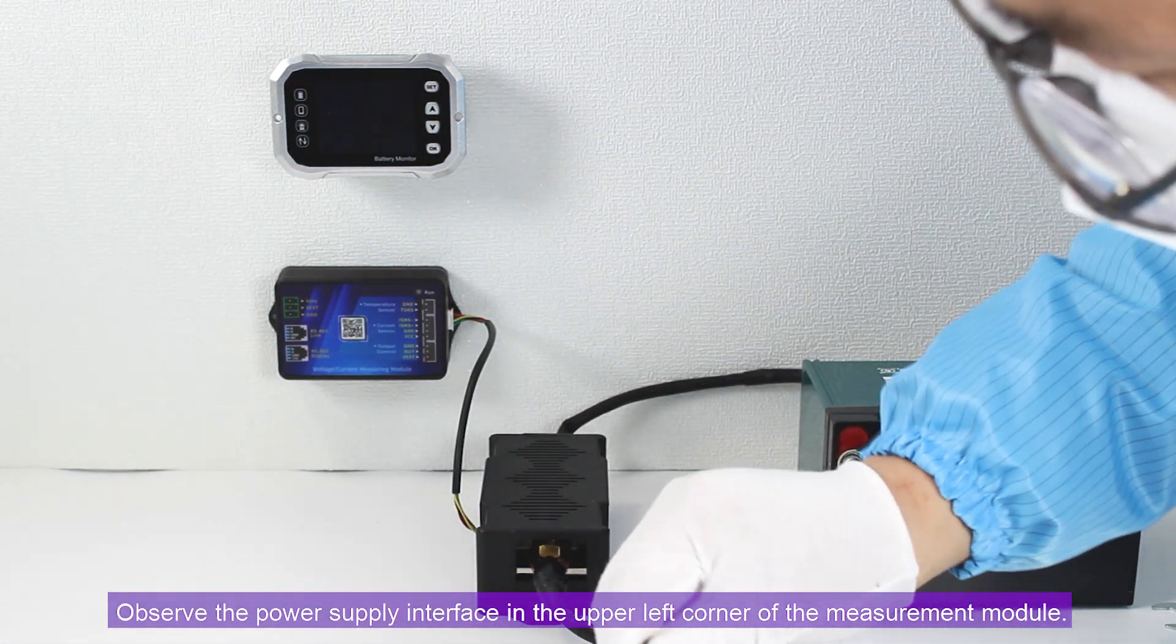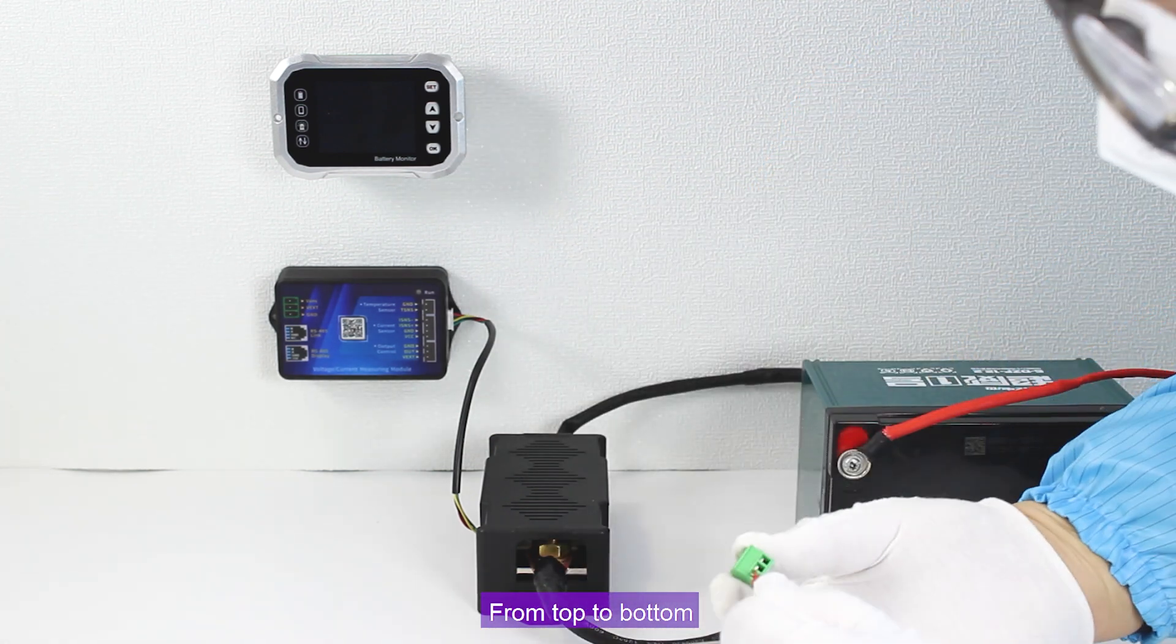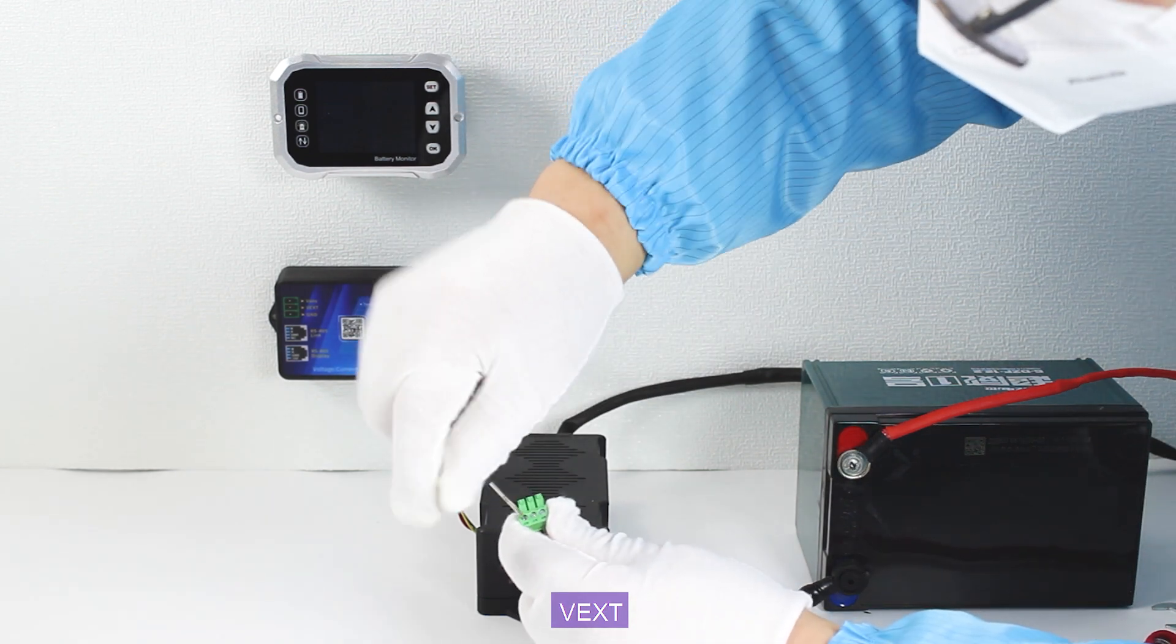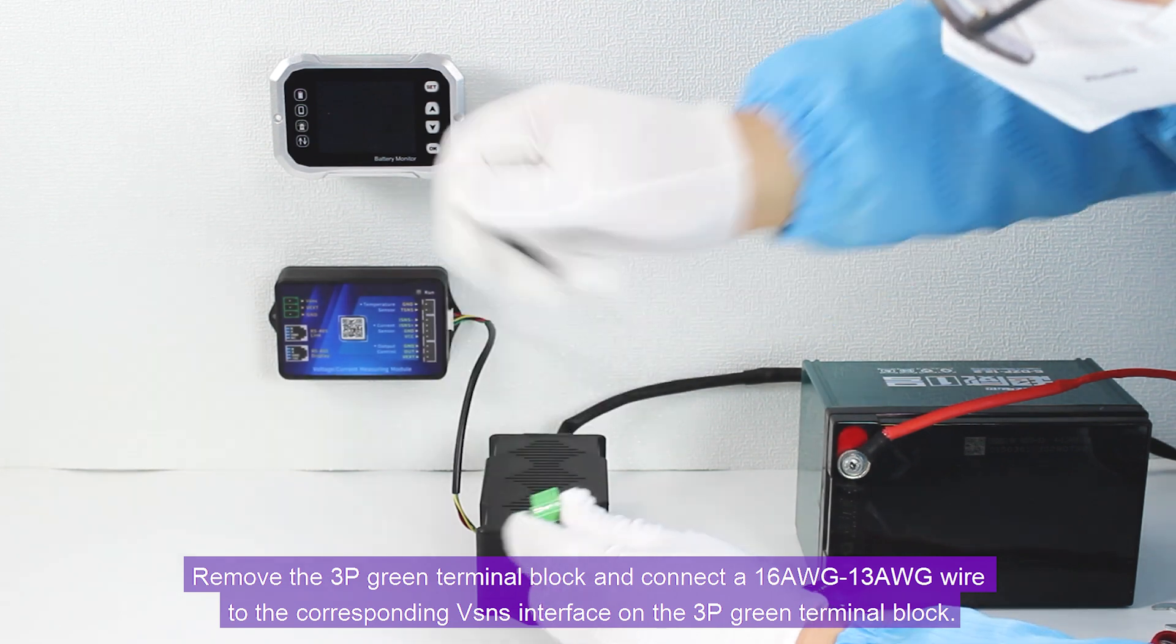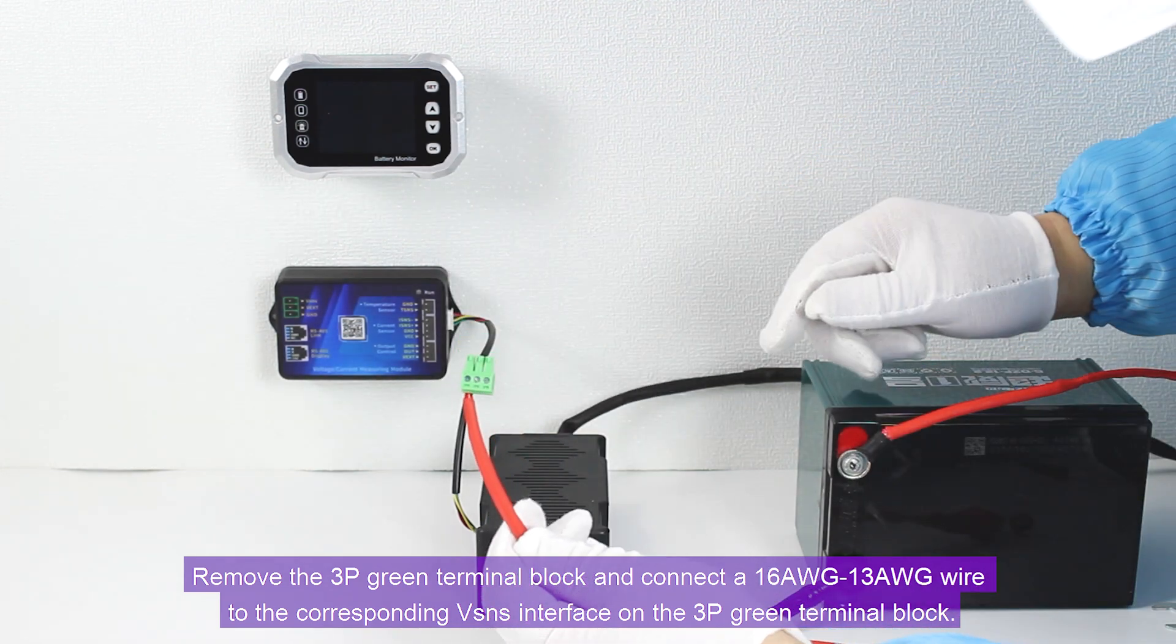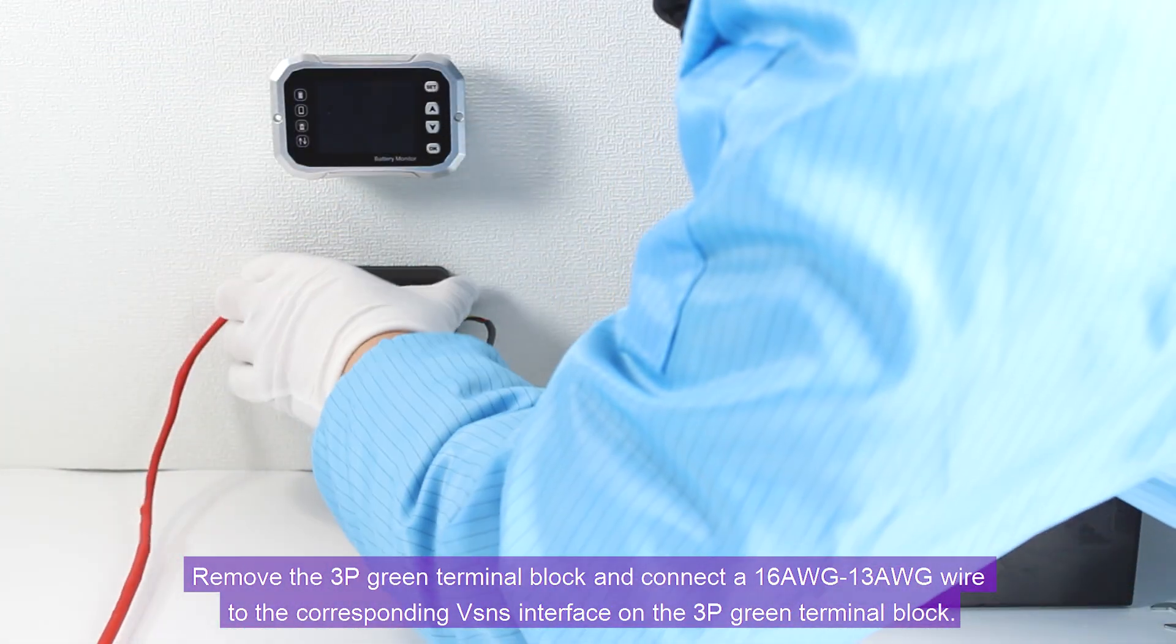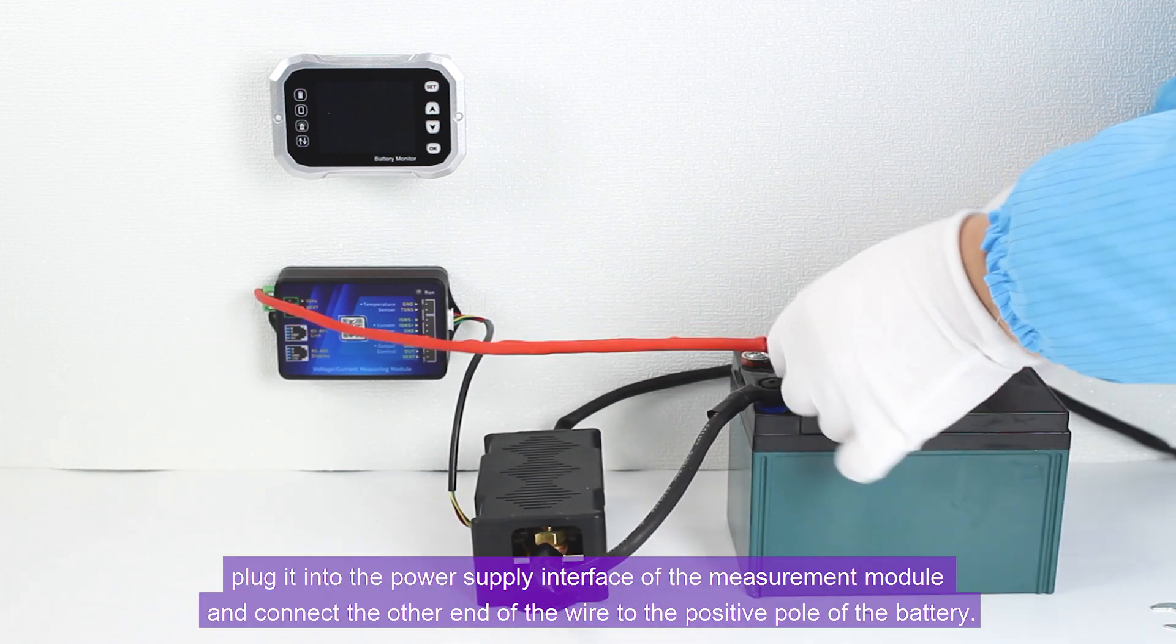Observe the power supply interface in the upper left corner of the measurement module. From top to bottom they are VSNS, VEXT, and GND. Remove the 3P green terminal block and connect a 16 AWG to 13 AWG wire to the corresponding VSNS interface on the 3P green terminal block. After connecting it, plug it into the power supply interface of the measurement module.